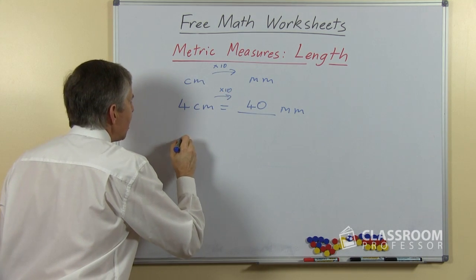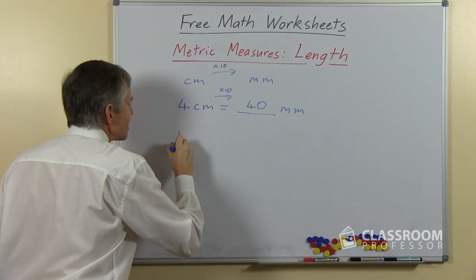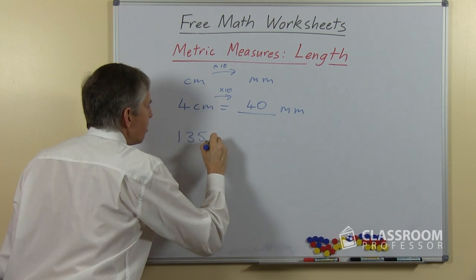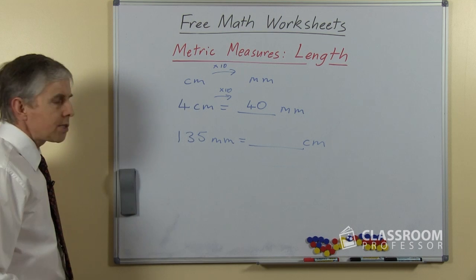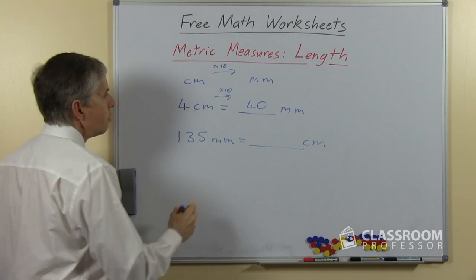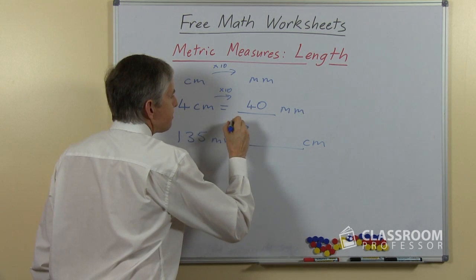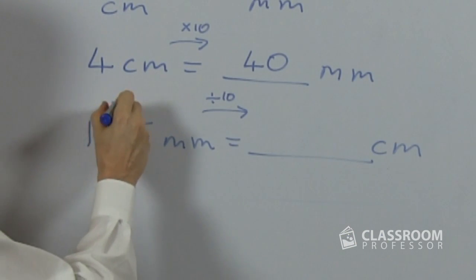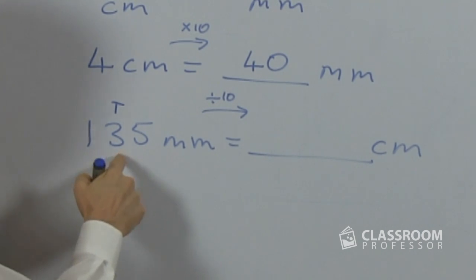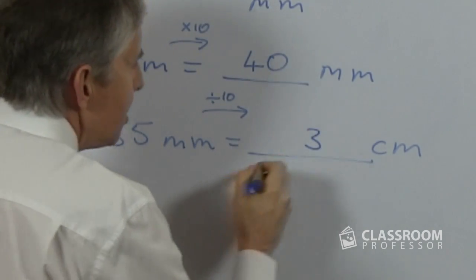Let's do one going the other way, and we'll do a harder one. Let's take 135 millimeters, is how many centimeters? This time we're dividing by 10. Where are the tens? In this number which is the tens place, right there. So that 3 will be 3 centimeters.